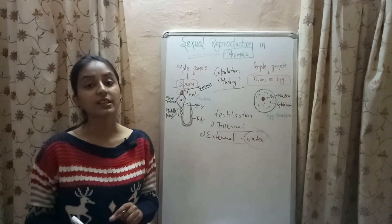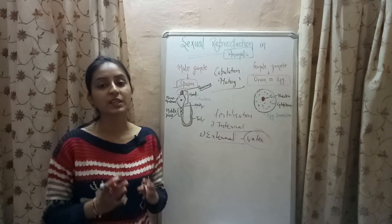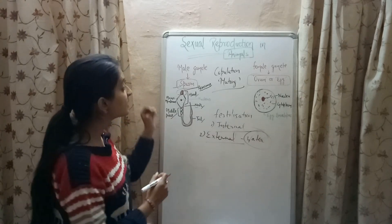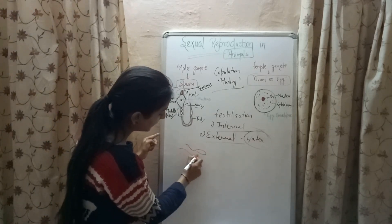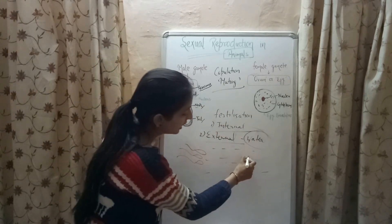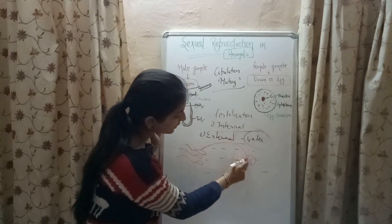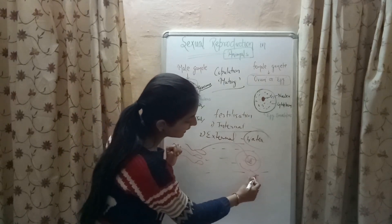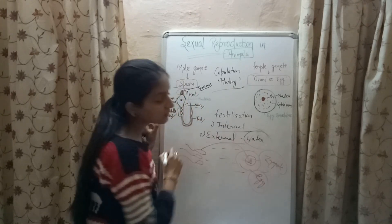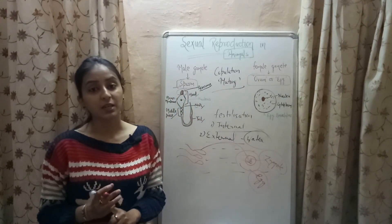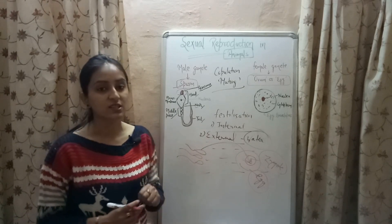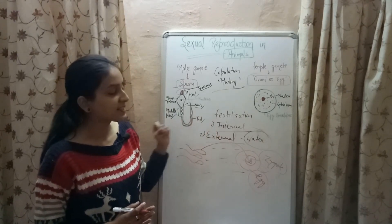In external fertilization, the fusion between the male and female gamete occurs outside the female body in a medium like water. The male animal releases its sperm in water, and similarly the female animal releases its ovum in water. The sperm fuses with the ova, leading to the formation of the fertilized egg or fertilized ovum, which is known as zygote. External fertilization takes place in amphibians like frogs and fishes.